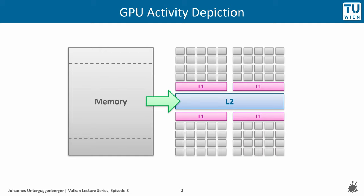Whenever data from memory is requested, it needs to first go into the L2 cache, from where it is further sent to the L1 caches for processing in a cluster. From such a cluster, where shader programs are executed on multiple cores in parallel, it can also happen that data needs to be written back to memory, like for example storing something into an image. This can go back to L2 and is eventually stored in GPU memory.